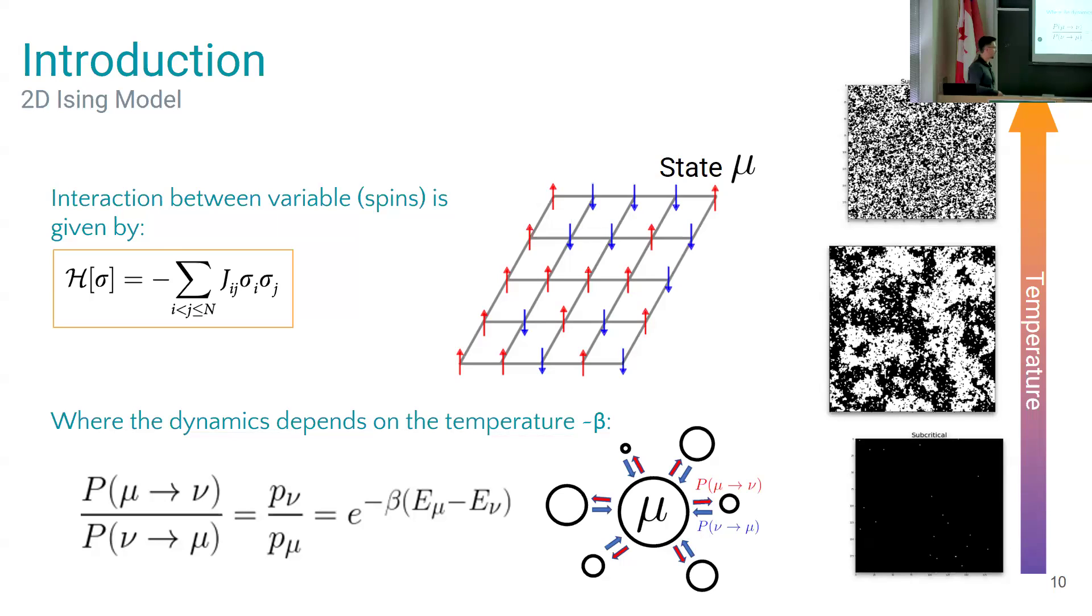Usually people do maximum likelihood estimation to find these parameters, the temperature for example. But the problem is this just works when your data is really really good and you have a bunch of time points and also just a few ROIs. So it's not my case, my data is not good at all actually.